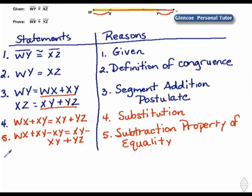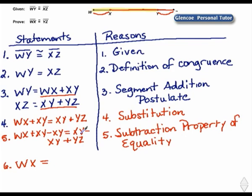Statement number six: if we actually do the subtraction, X-Y minus X-Y leaves zero, so on the left side of our equation we have W-X, and on the right side, X-Y minus X-Y cancels, leaving us with Y-Z. So W-X equals Y-Z.